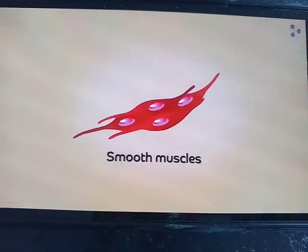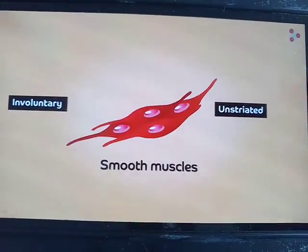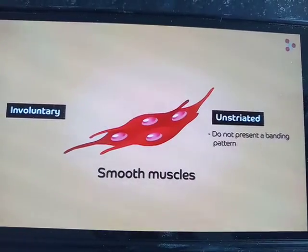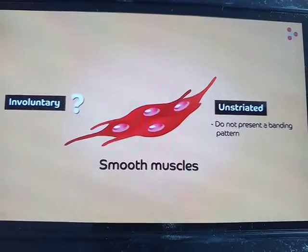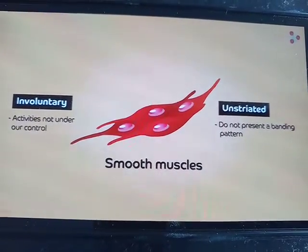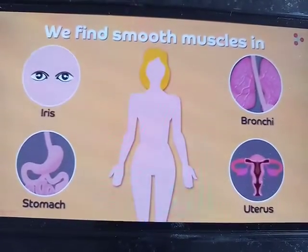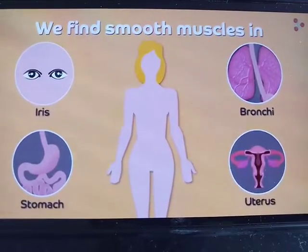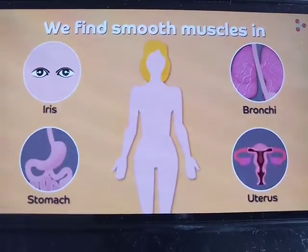Smooth muscles are also called unstriated muscles and involuntary muscles. They do not present a banding pattern — the light and dark bands are absent, hence they are called unstriated muscles. These muscles are long, spindle-shaped, and uninucleate. They are not in our control, hence they are called involuntary muscles. We can find smooth muscles in the stomach, bronchi, uterus, and in the iris of the eye.